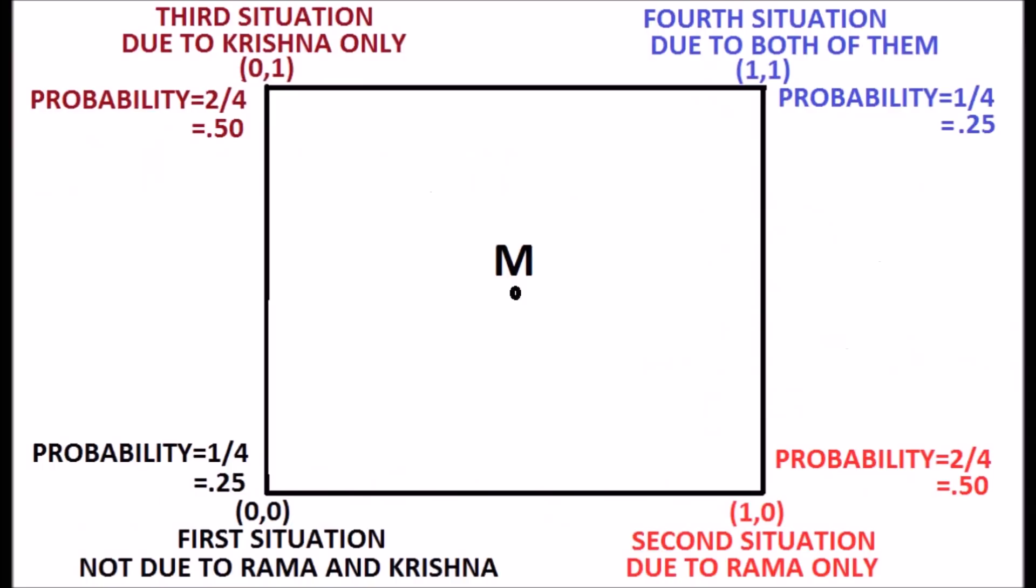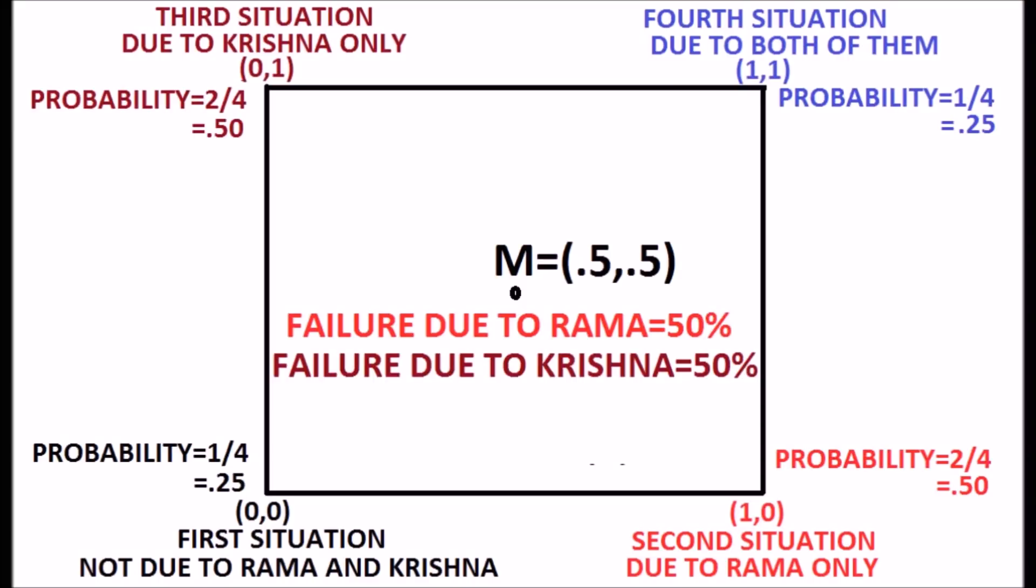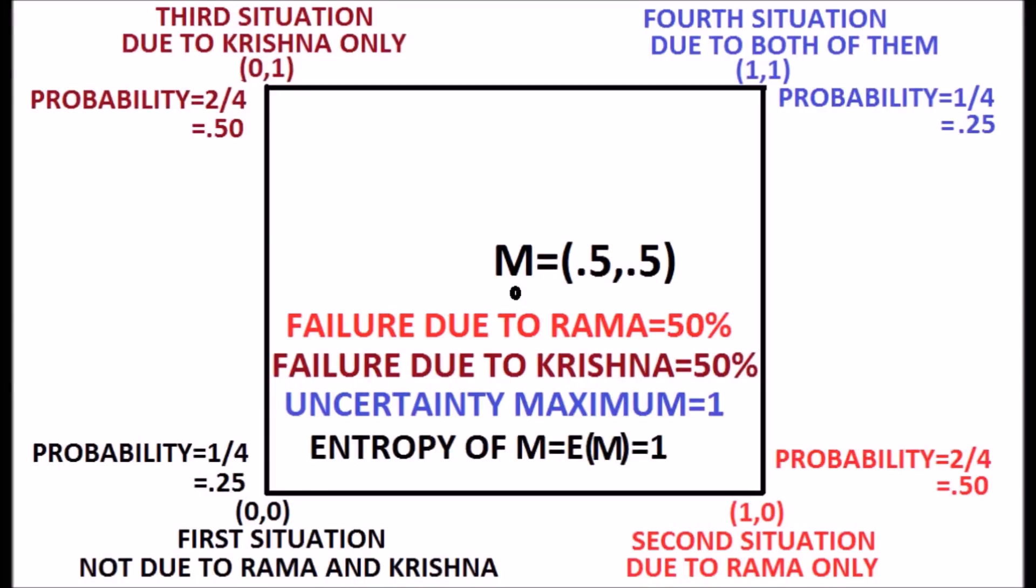The middle point of the unit square M is having membership value 0.5, 0.5. At this situation, the failure due to Rama is 50% and Krishna is also 50%. Here, the uncertainty is maximum. We calculate the entropy of the fuzzy set M which is equal to 1. So, the fuzziness is maximum that is equal to 1.